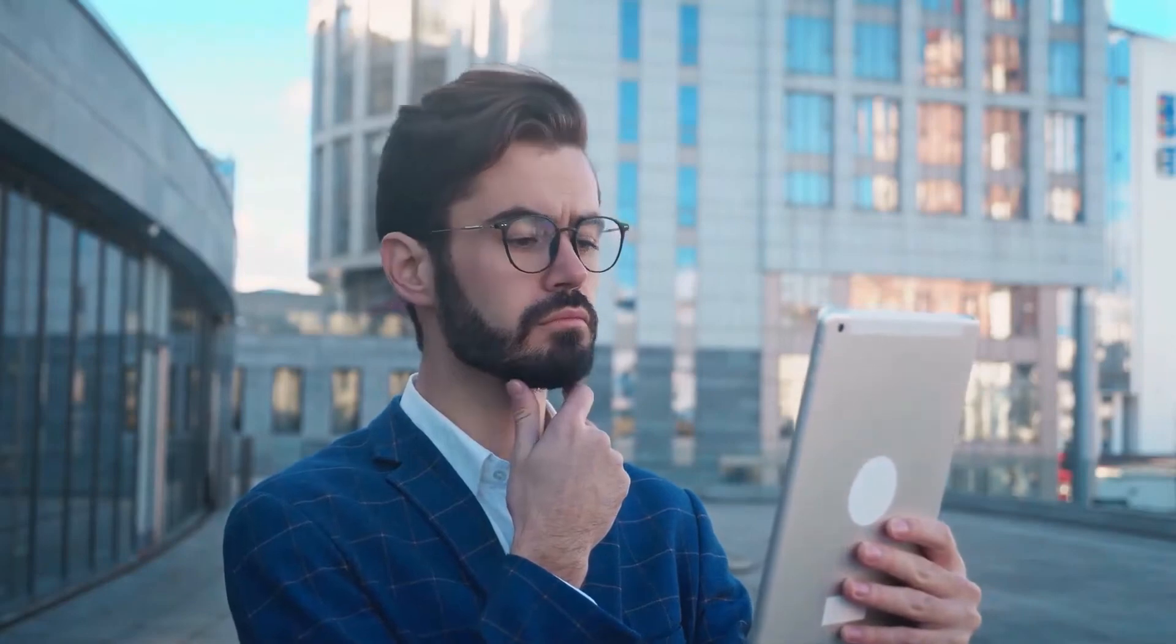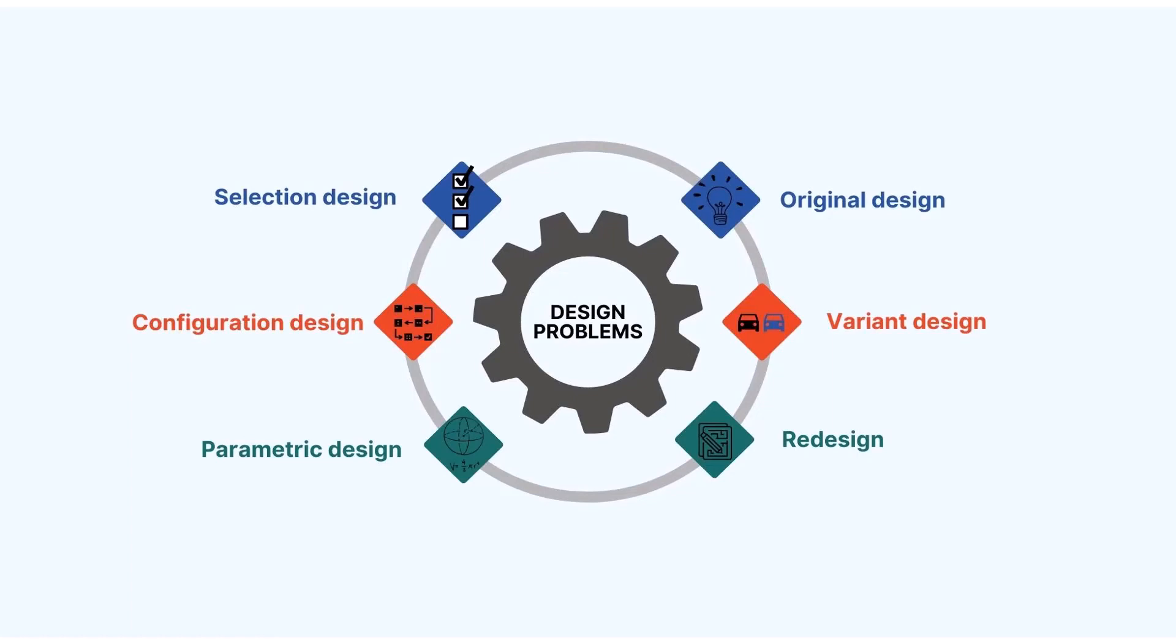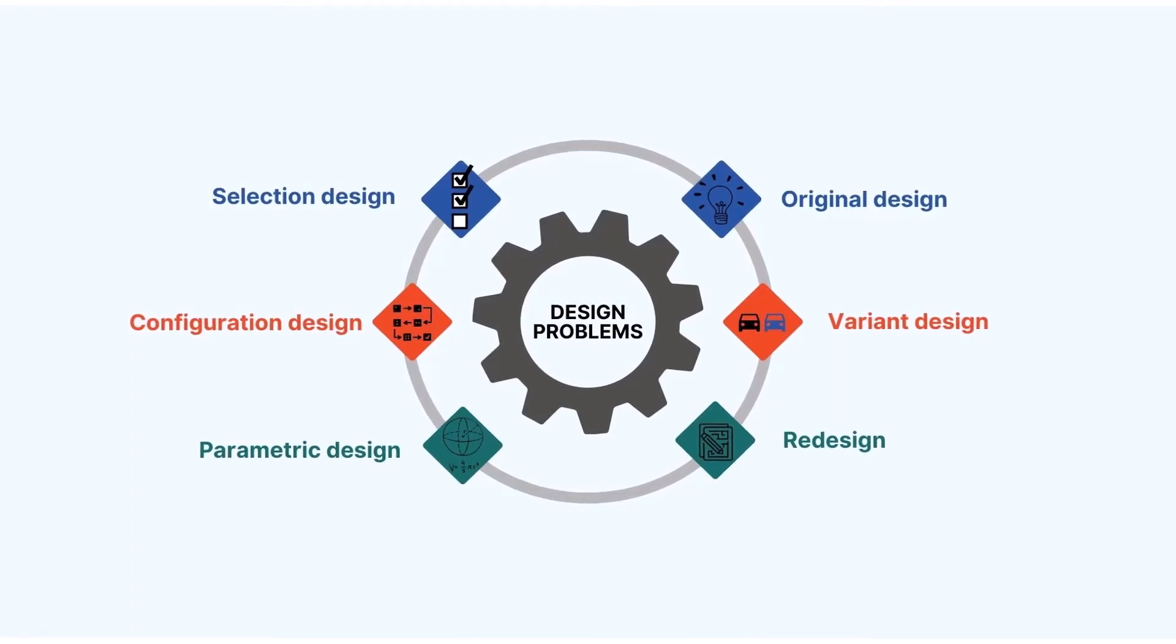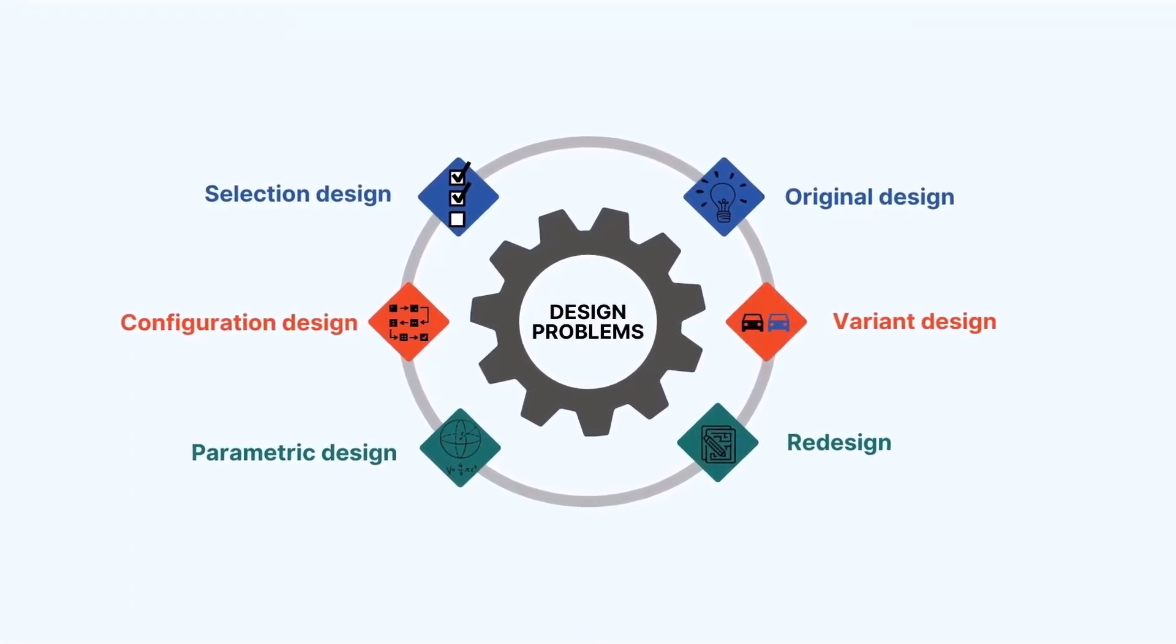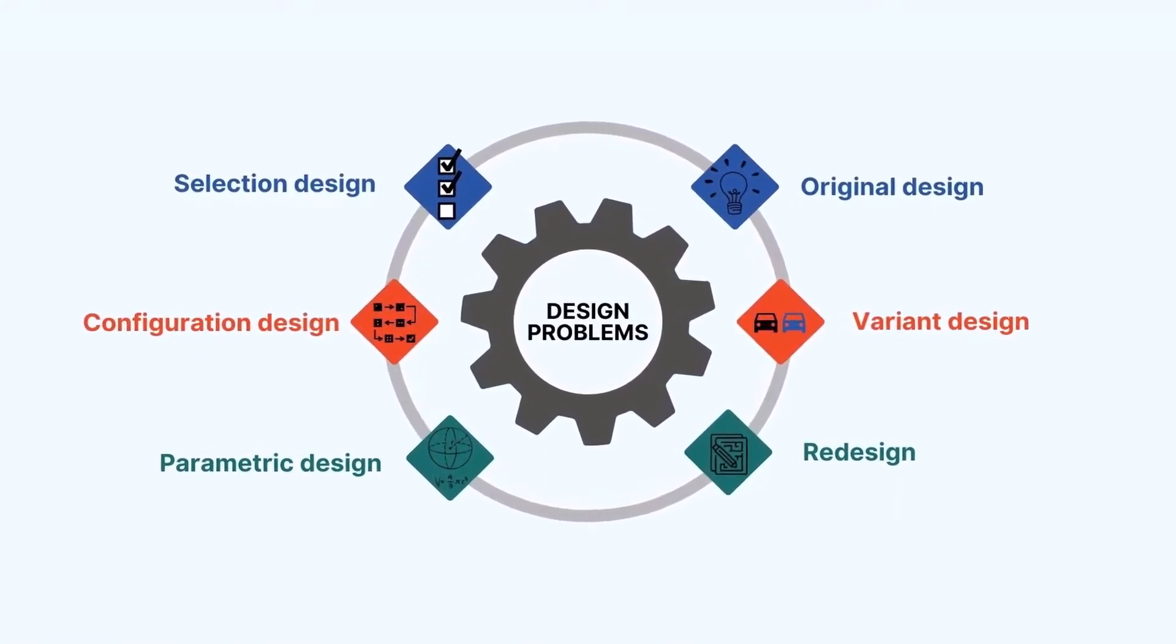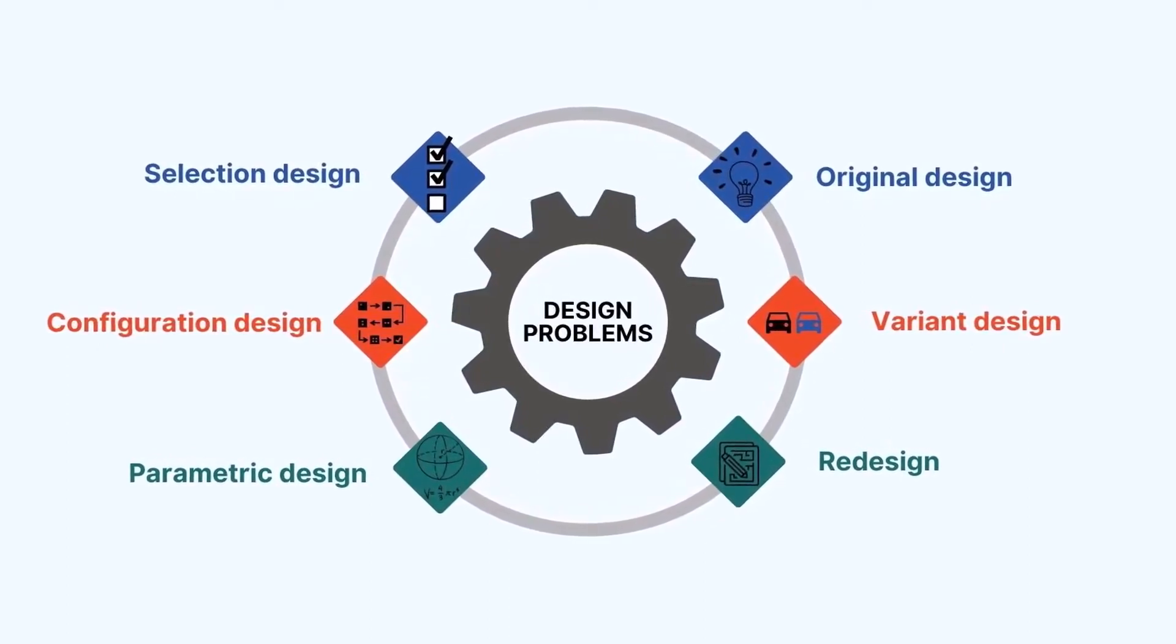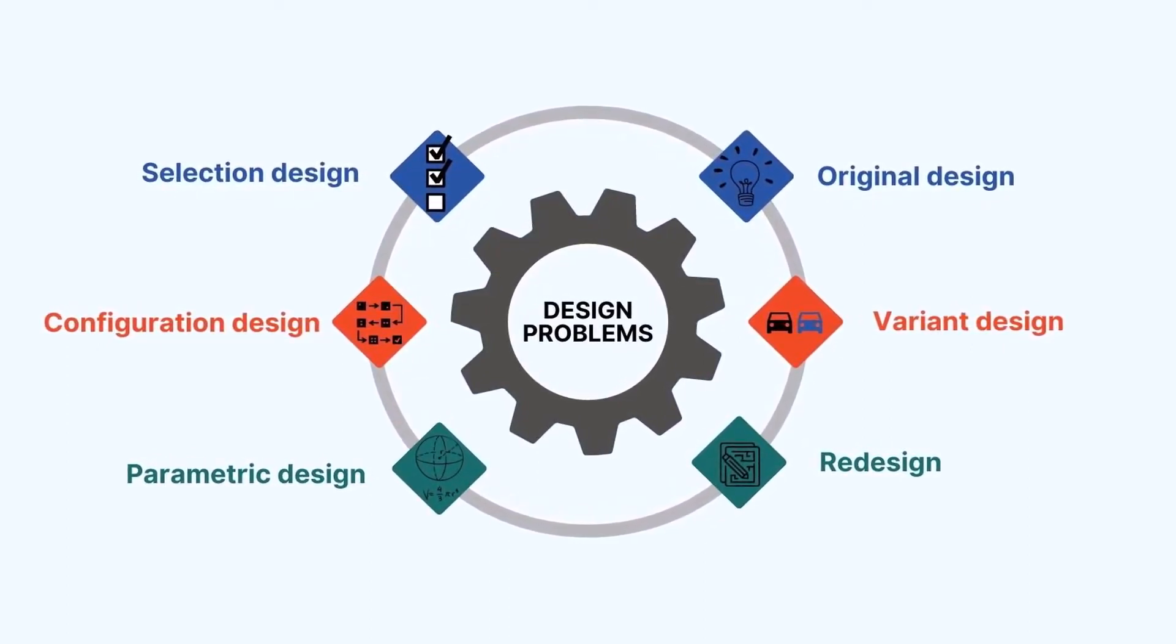Your job is to have a big picture and know how these components will impact your product that will, in the end, impact your end customer. Type of mechanical design problems. As a mechanical design engineer, you will encounter different design problems throughout your career. We can divide those into selection, configuration, parametric, original, variant design, and redesign problems. Sometimes you will have only one design problem and sometimes a mix of various types of problems.